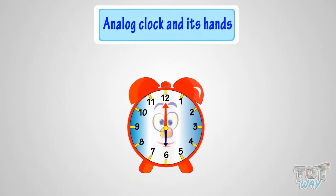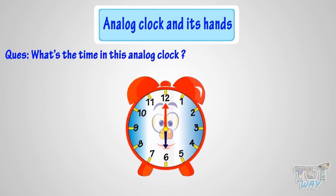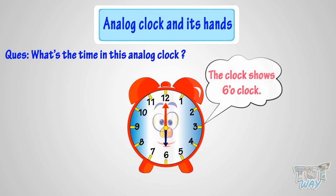Can you tell me what's the time in this analog clock? Let me help you do that. The clock shows 6 o'clock. When the minute hand is at 12, it is time to the hour.